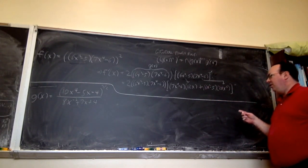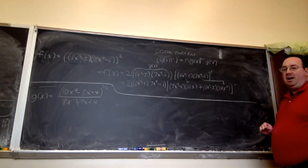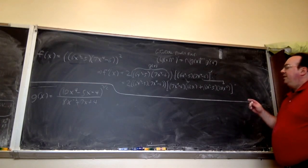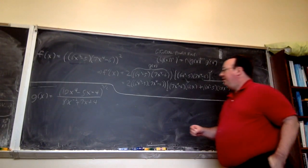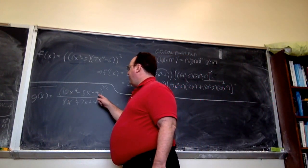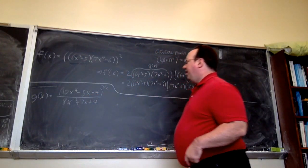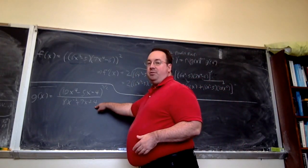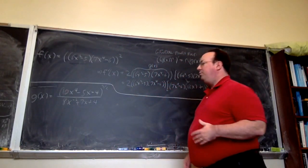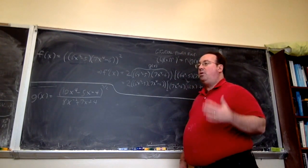Problems like this in Hox do not require simplification, so you can stop here. Now for the second function: we have (10x⁴ − 5x)^(−4) all raised to the 3/2 power, and then that is divided by (8x^(−2) + 7x + 4). So first and foremost, this is a quotient, so we are going to use the quotient rule first.